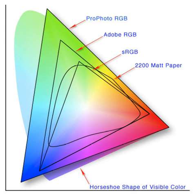CIEXYZ, sRGB, and ICTCP are examples of absolute color spaces, as opposed to a generic RGB color space. A non-absolute color space can be made absolute by defining its relationship to absolute colorimetric quantities. For instance, if the red, green, and blue colors in a monitor are measured exactly, together with other properties of the monitor, then RGB values on that monitor can be considered as absolute.